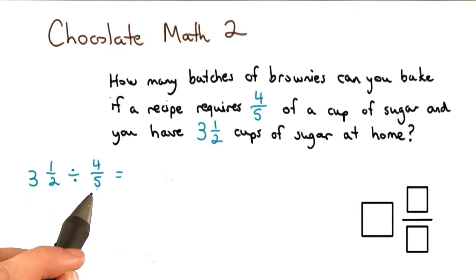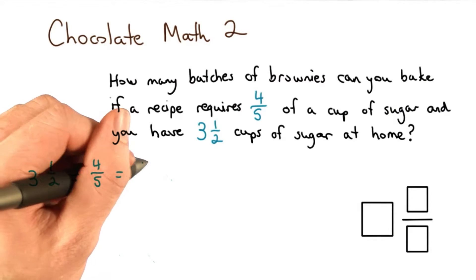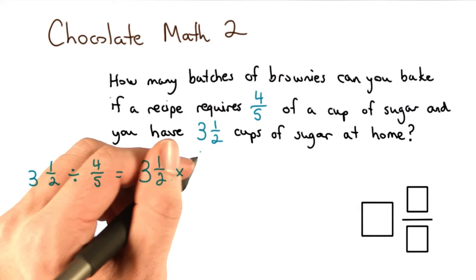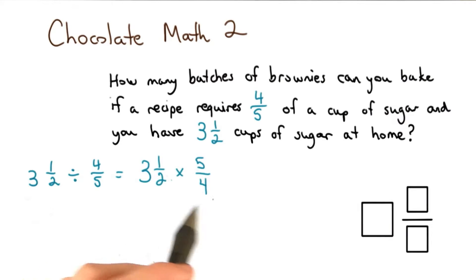I know dividing by a fraction is the same thing as multiplying by its reciprocal. So I want to take 3 1⁄2 and multiply it by the reciprocal of 4/5. The reciprocal of 4/5 is 5/4. Now I need to multiply these two fractions together.